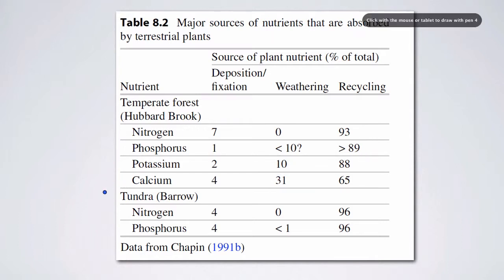If we take a look at the tundra, for example, in northern Alaska, only 4% of nitrogen and phosphorus comes from deposition or fixation, almost very little comes from weathering, and almost all of it comes from recycling.